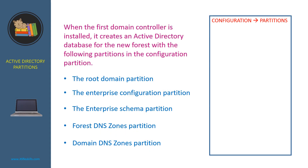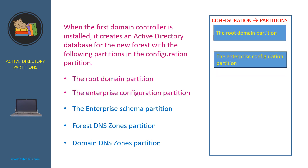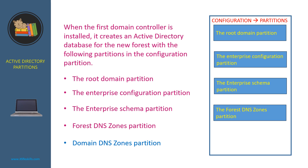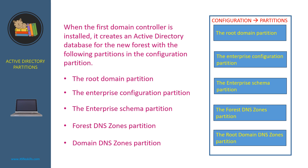When the first Domain Controller is installed, it creates an Active Directory database for the new forest with the following partitions in the Configuration Partition: the root domain partition, the enterprise configuration partition, the enterprise schema partition, the forest DNS zones partition, and the domain DNS zones partition.